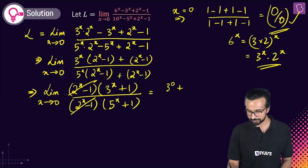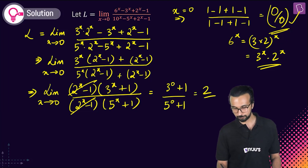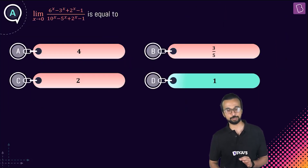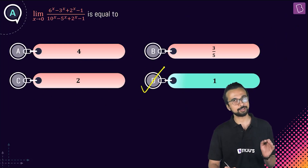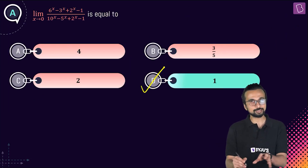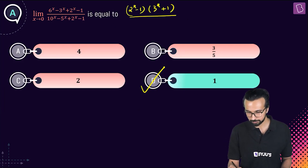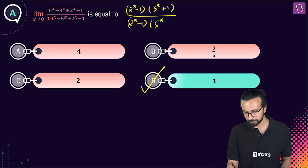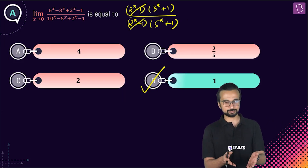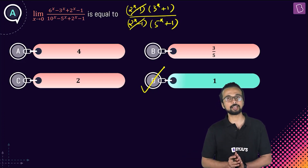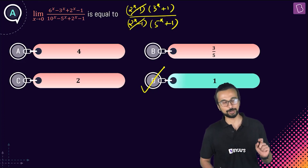After canceling (2ˣ - 1), we get (3ˣ + 1)/(5ˣ + 1). Substituting x = 0: (1 + 1)/(1 + 1) = 2/2 = 1. Final answer is option D: 1. The key was recognizing (2ˣ - 1) as common to both numerator and denominator, factoring it out, canceling, and substituting directly.